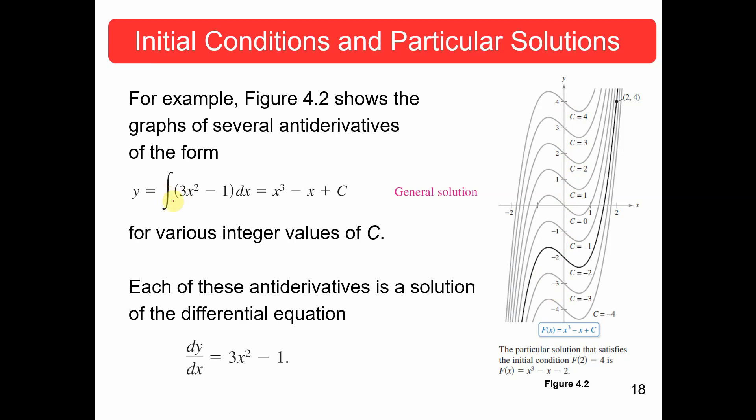Now, notice here that if we take the integral of 3x squared minus 1 dx, we're going to raise this to 3 and divide by 3. So, you get 3x cubed over 3, which is just x cubed. 1, we know that the derivative of a constant is just that constant times x, and then the plus C.